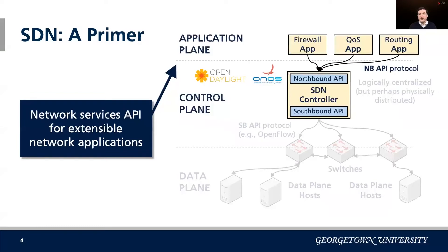Developers can write network applications that implement some desired functionality using a standard set of northbound API calls and services. These apps set the network's policies. Overall, these layers and abstractions make it easier to program the network, but how do they impact the network's security posture?